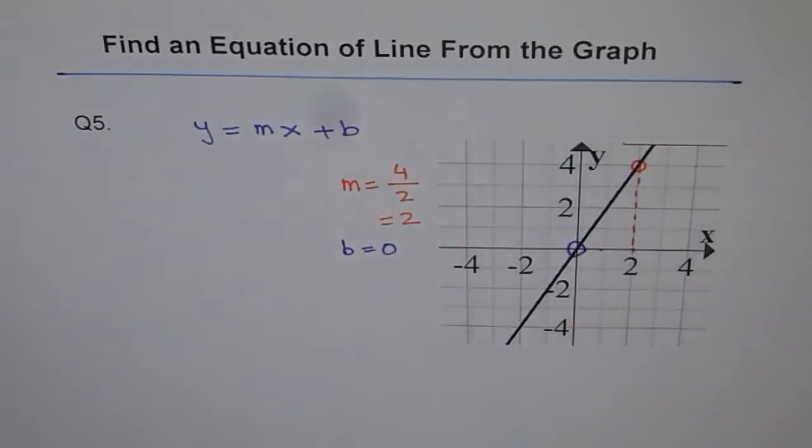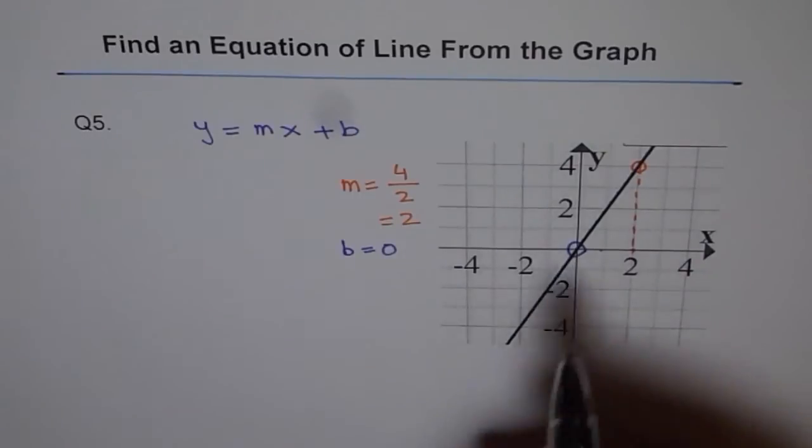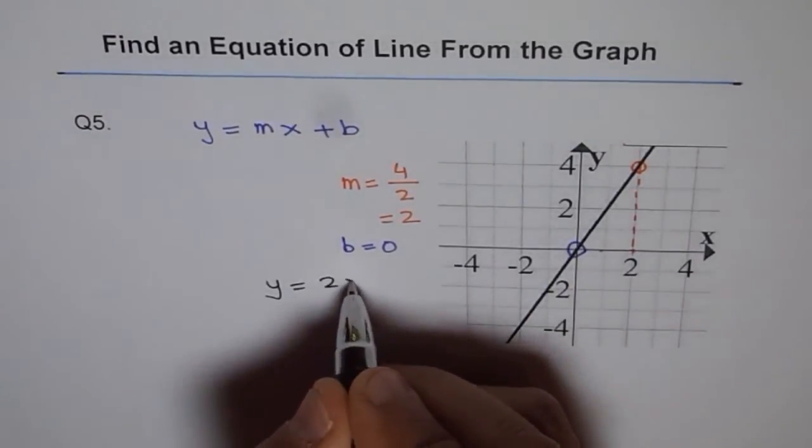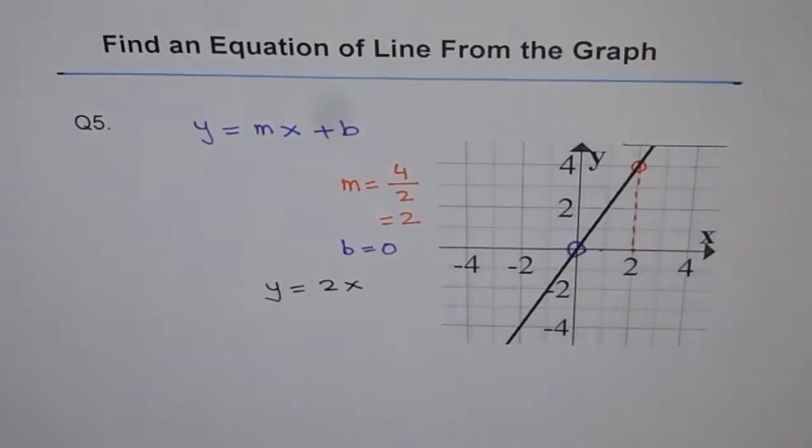So we have slope of 2 for this line and y intercept is 0. Therefore, equation of this line is y equals to 2x plus 0. So it's good to write y equals to 2x.